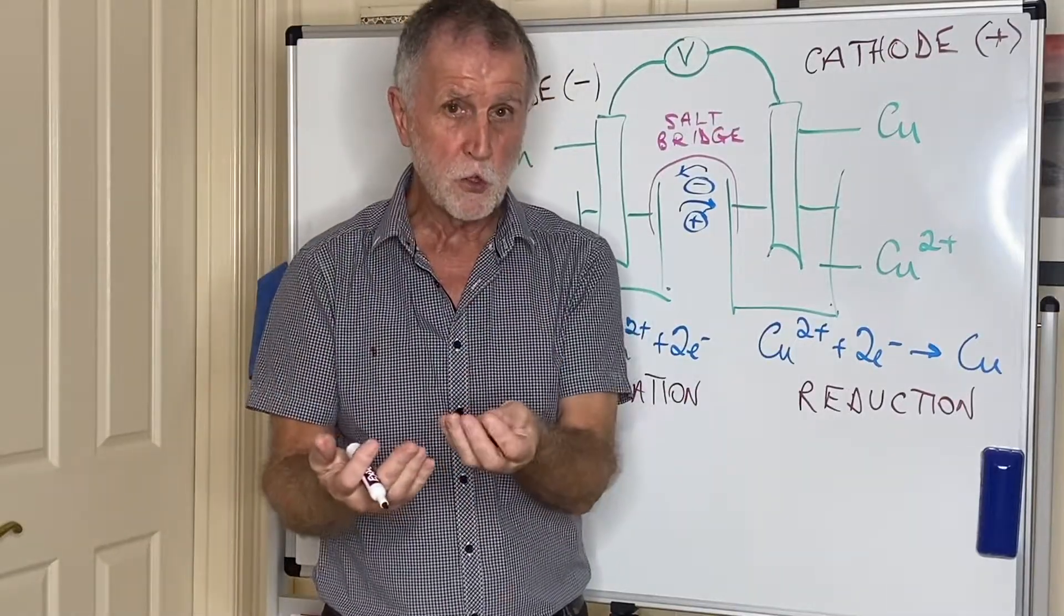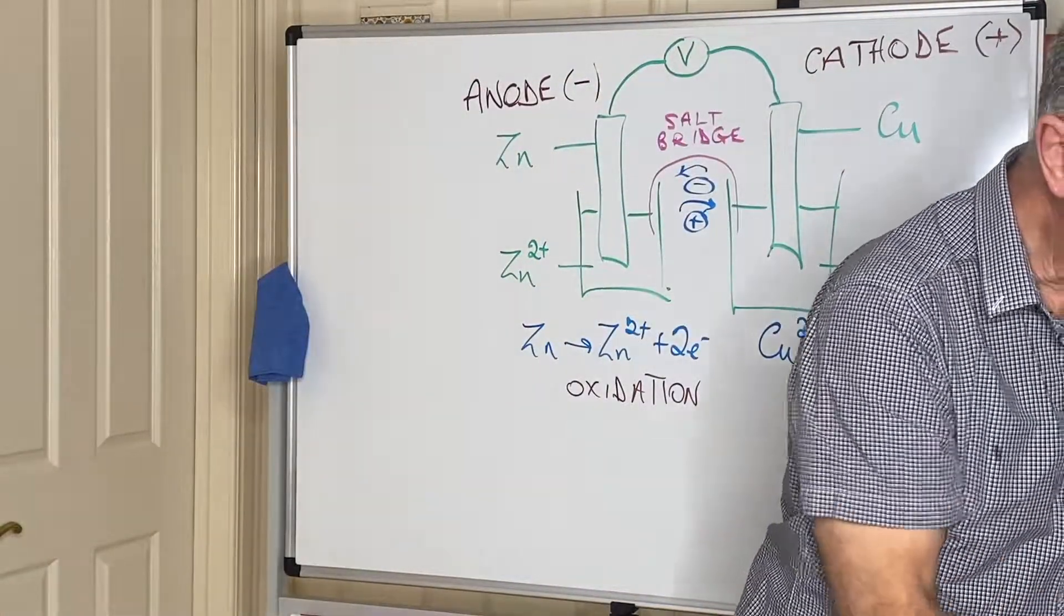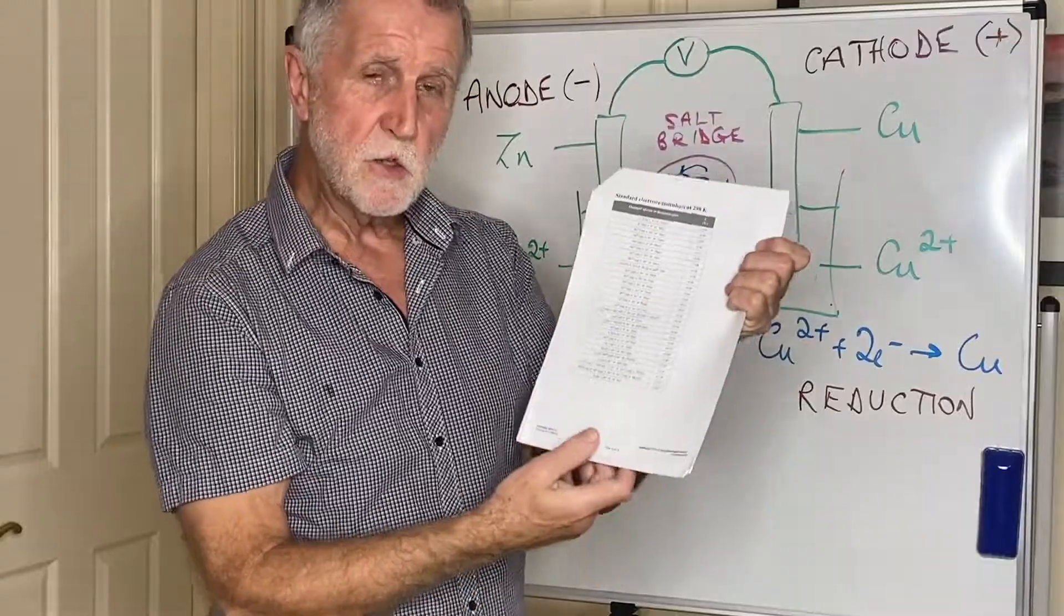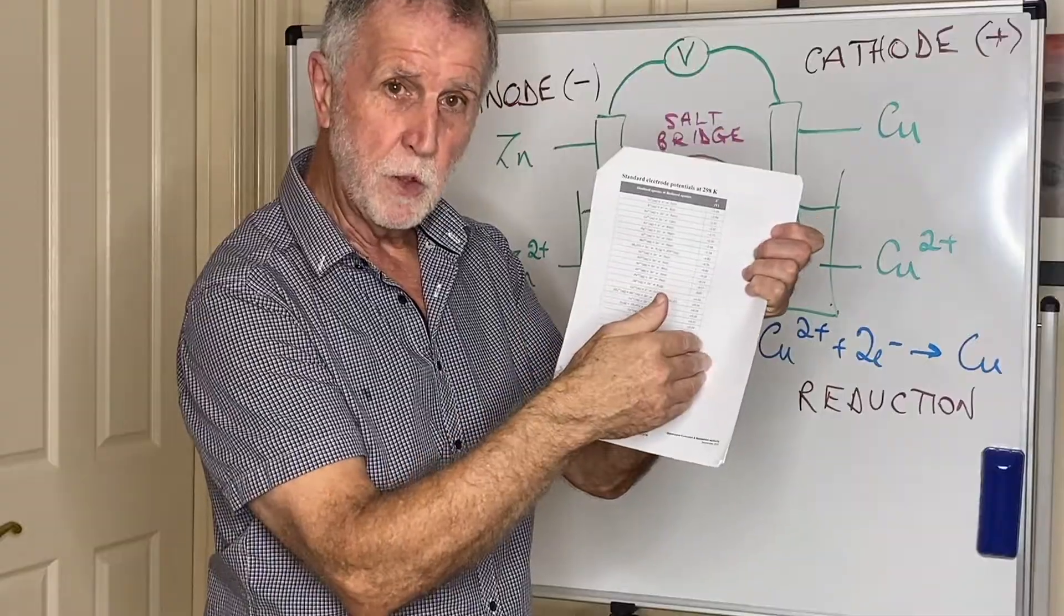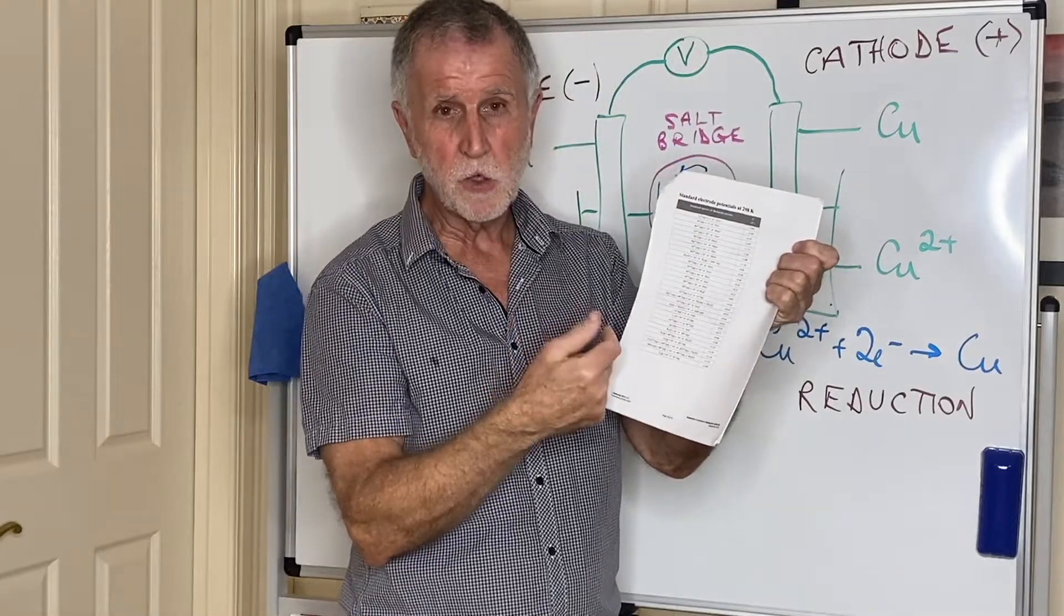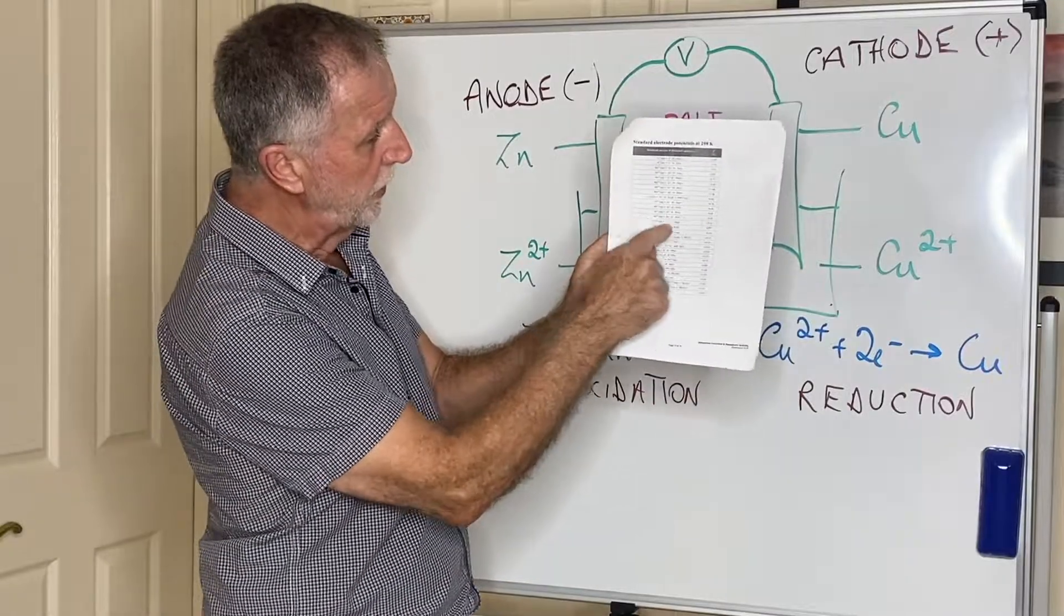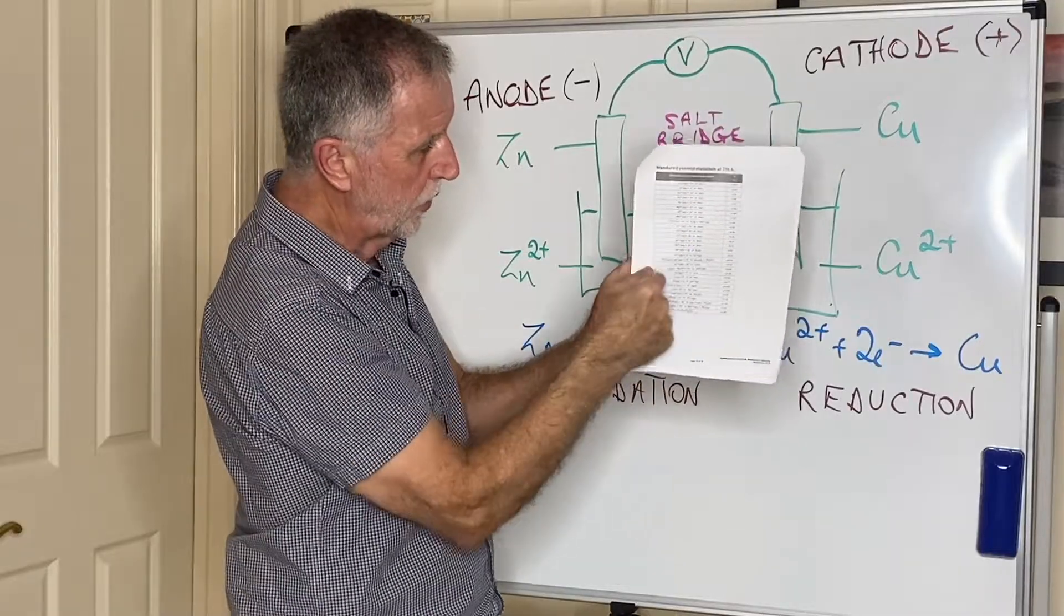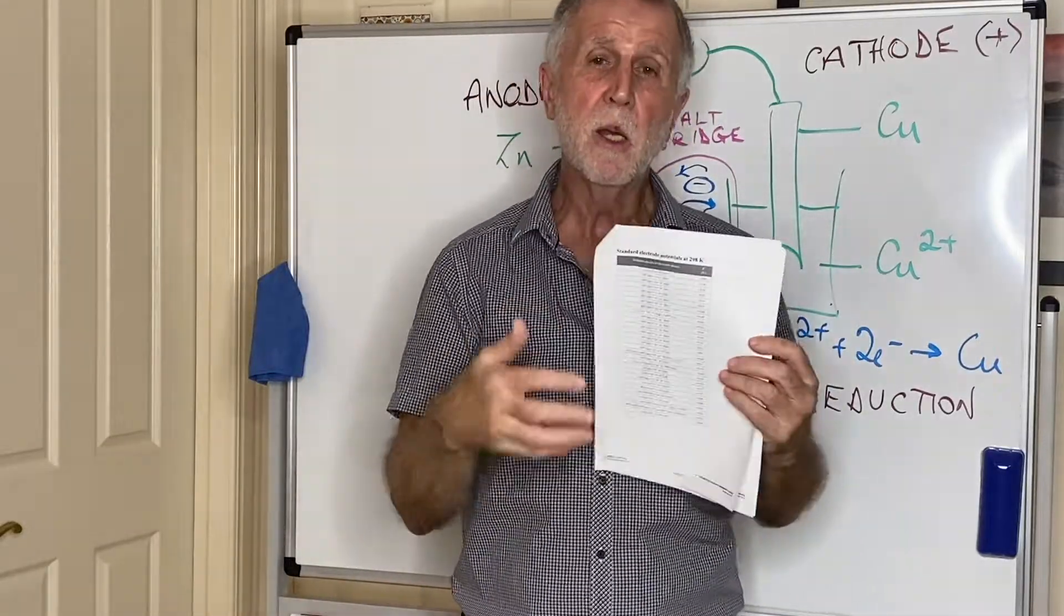In the data book, they will give you a chart of all the different half reactions. Again, as I said before, by convention they're all written as reductions in the forward direction. What you have to do is effectively change one of them to become an oxidation. So if you had these two here, you'd find zinc would be up here, copper down here. The zinc would have to go in the reverse direction, the copper would go in the forward direction. What I tell my students is the easiest way to remember that is the anti-clockwise rule.